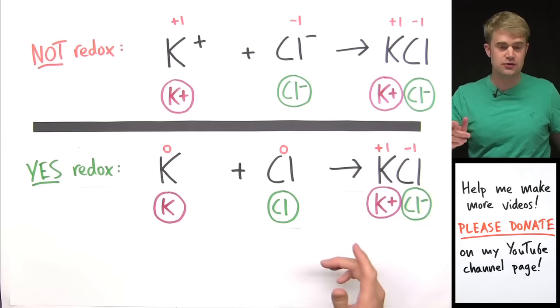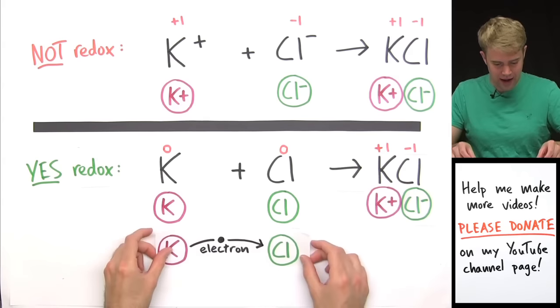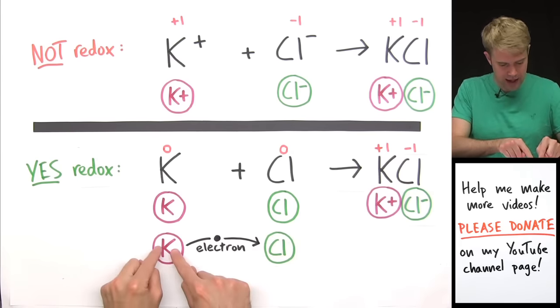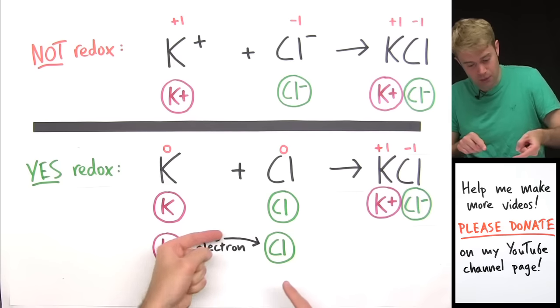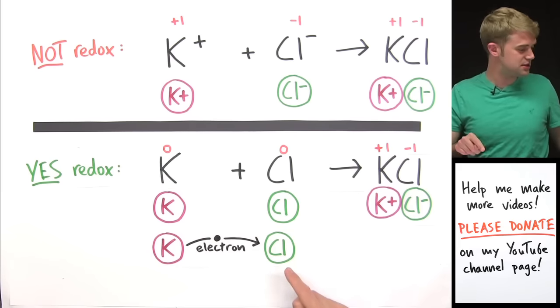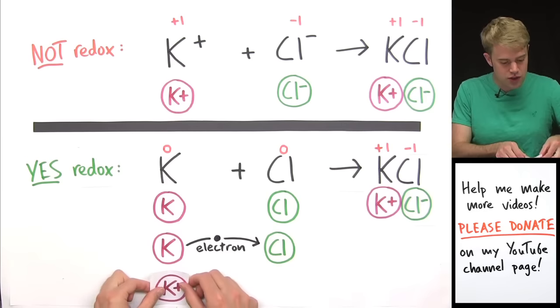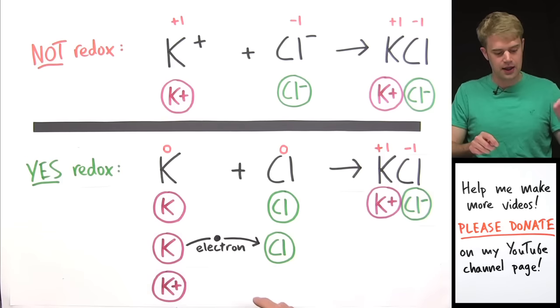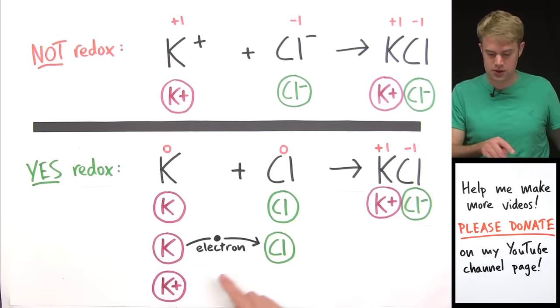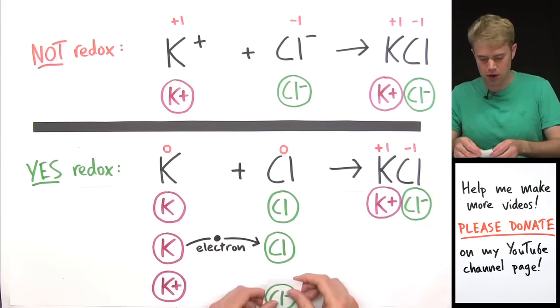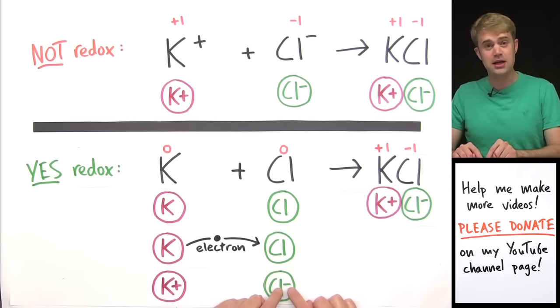So in order for K and Cl to become K+ and Cl-, there has to be a transfer of electrons. So what happens is K, potassium, gives up one of its electrons. It gives it to Cl. K loses one of its electrons to become K+, or potassium +1.